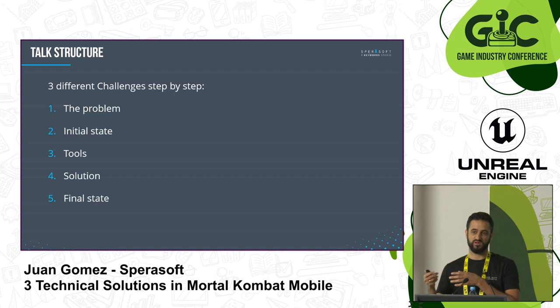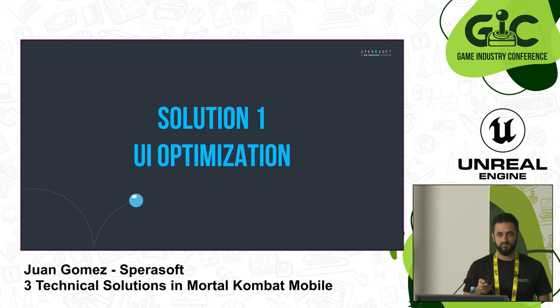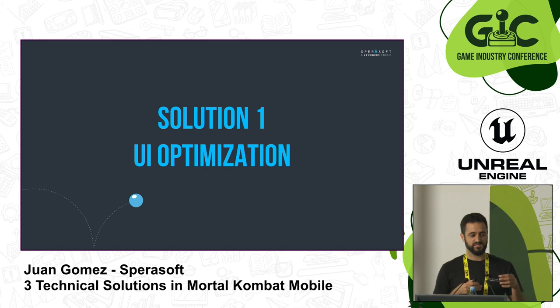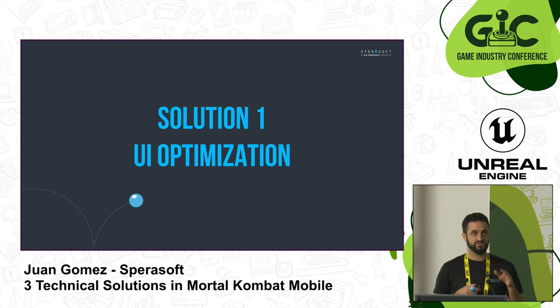Let's talk about the first point: UI optimization. Mobile games have a lot of user interface — lots of menus, animations — they're heavy. We have a lot of low-end devices. For example, we were supporting iPhone 6 and Android 5 devices, which are considerably slower than what we have nowadays.